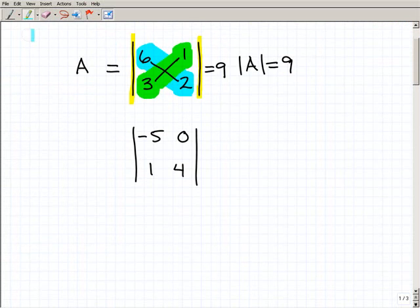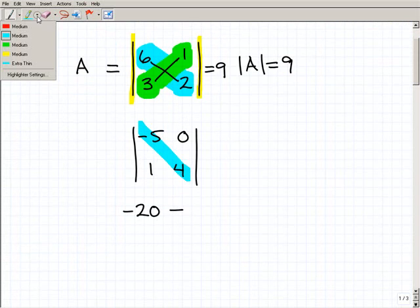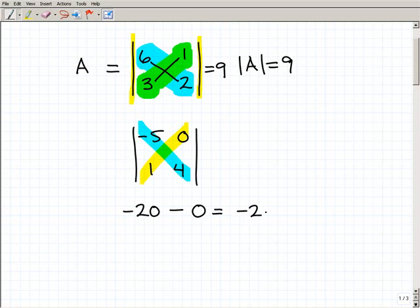So once again, all you're going to do is you're going to multiply these two together. So negative 5 times 4 is going to be negative 20 minus 1 times 0, which, of course, is 0. So the determinant is negative 20. Really, really easy stuff here.